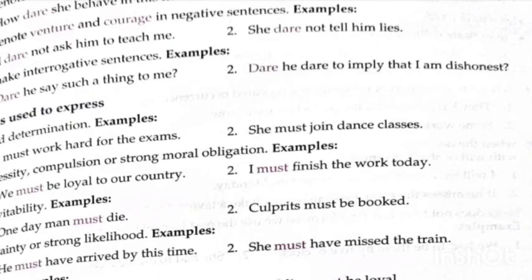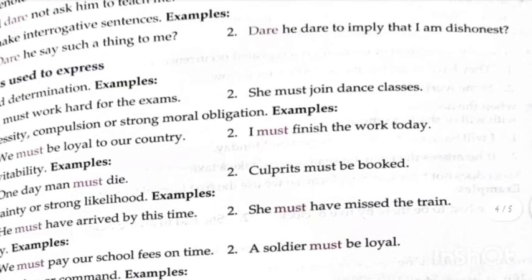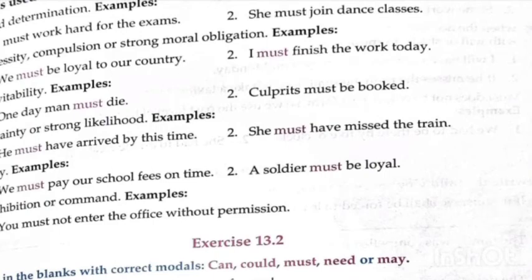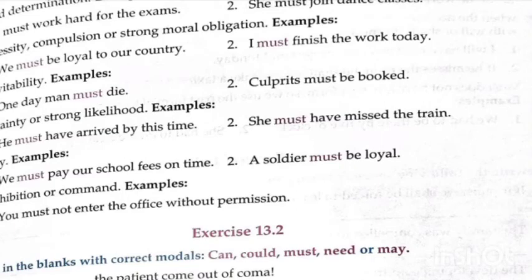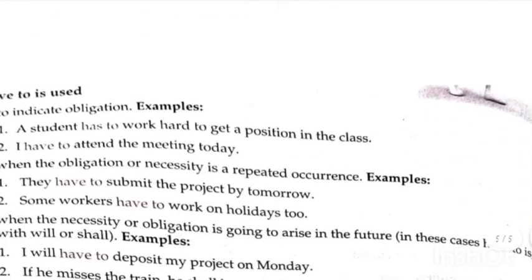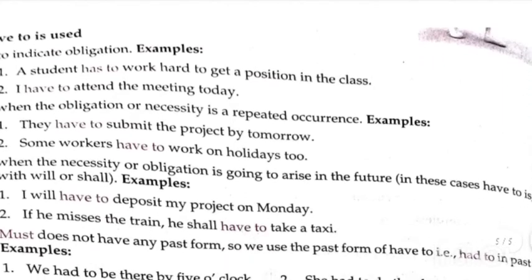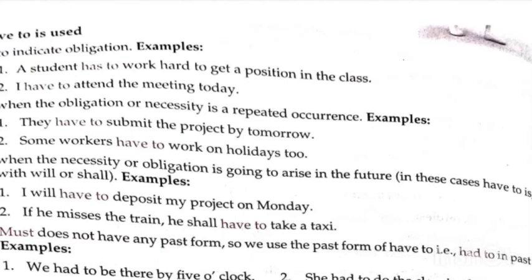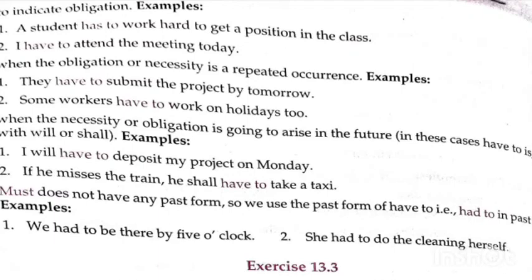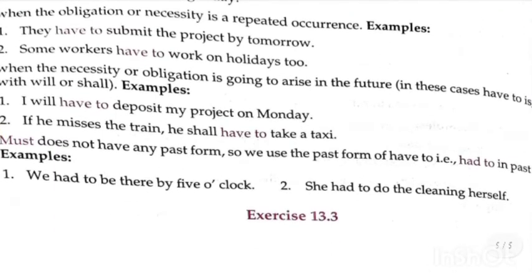Must is used to express determination: You must work hard; she must join the classes. For necessity and moral obligation: We must respect our elders; we must be loyal to our country. For inevitability — things we cannot avoid: One day man must die; culprits must be booked. For strong likelihood: He must have arrived by this time. For duty: We must pay our school fees on time. For prohibition: You must not enter the office without permission. Have-to for obligation: A student has to work hard to get a position; I have to attend the meeting today. For repeated obligation: They have to submit the project by tomorrow. For future necessity: I will have to deposit my project on time. Since must has no past form, we use had to: She had to...